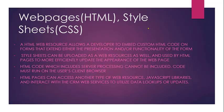An HTML web resource is used to embed custom HTML code into your CRM organization. Once you've added the HTML web resource it can be added to any form to improve the presentation or to add extra functionality to the form. Style sheets of the type CSS can be uploaded along with your HTML code to improve the appearance of the form. HTML code needs to include code which can be run on the user's client browser — it cannot include code which has server processing in it. It can also be used with JavaScript libraries and interact with CRM web services to utilize data lookups or updates.